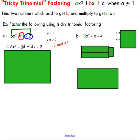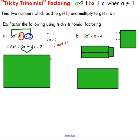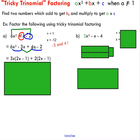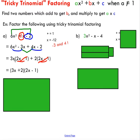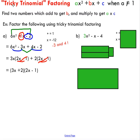Once you've identified your numbers, decompose the b term using them — same as before. Then group the four terms by similarities: 4x and negative 2 are similar, and 6x squared and negative 3x are similar. Common factoring the first group gives 3x out, and common factoring the second gives 2 out. You end up with a common factor of (2x minus one) inside both brackets. Factor that out and you're left with (3x plus 2) in the other bracket.